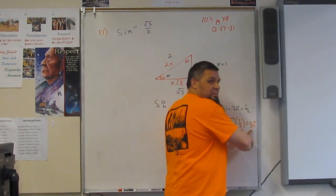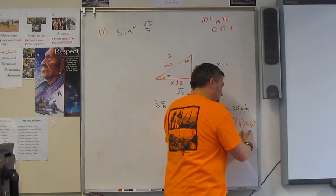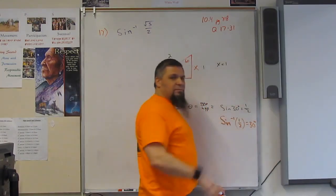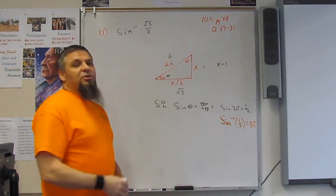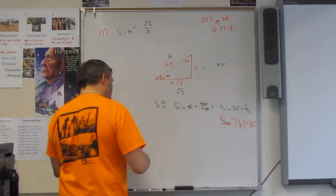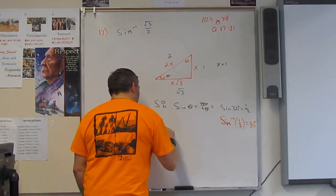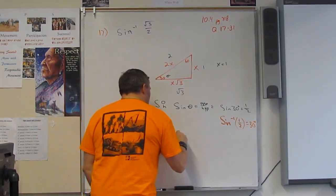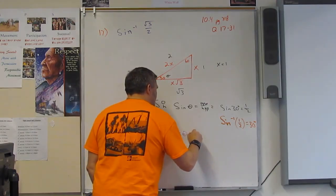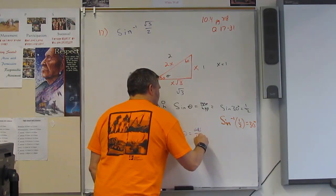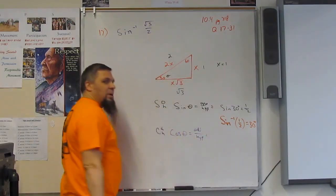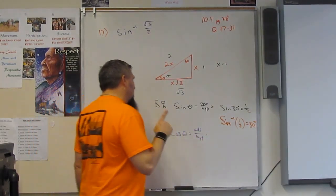That's it. If I wanted to do the cosine, so cosine of theta is equal to the adjacent over the hypotenuse. Well, that would mean that...